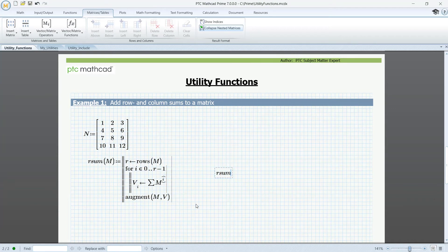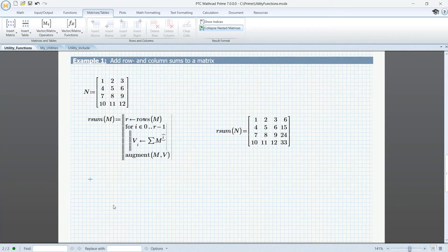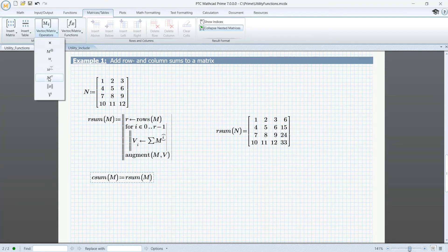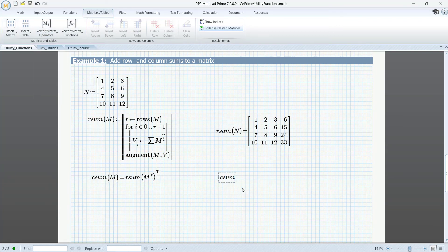For the column sums, C sum, we can transpose the matrix M and calculate the row sums and transpose the result back. So R sum, M transposed, and the result transposed. Let's check, C sum.